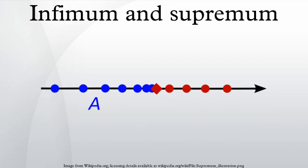The supremum of a subset S of a partially ordered set T is the least element in T that is greater than or equal to all elements of S, if such an element exists. Consequently, the supremum is also referred to as the least upper bound.